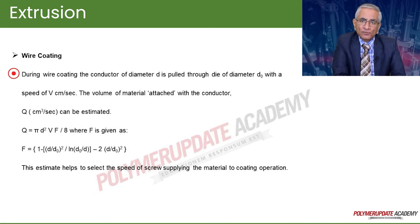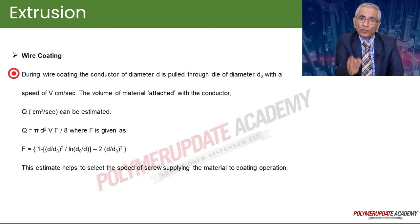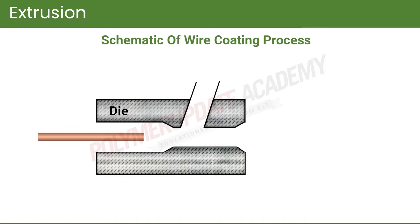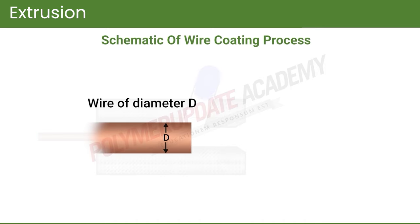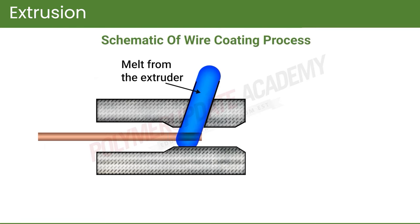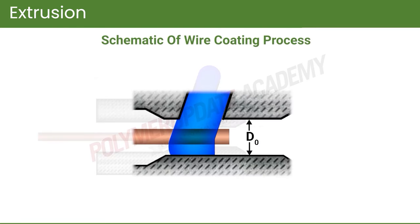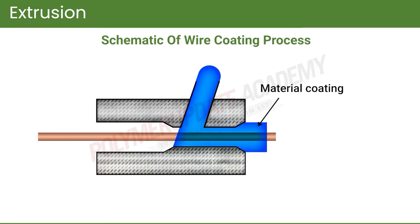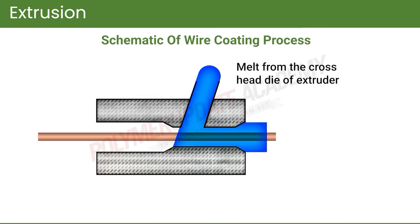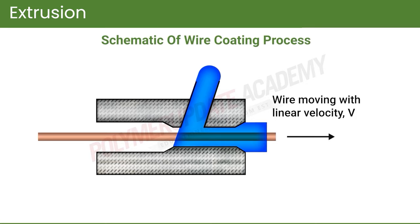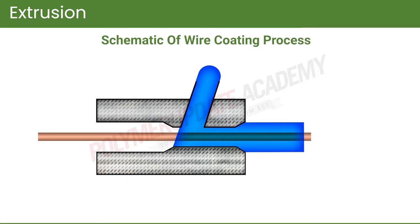This estimate helps to select the screw speed for supplying the required material. As seen in the previous part of the lecture, if we know the flow rate, we can select the appropriate speed. In the wire coating process, the conductor of diameter d is coated in a die where the die diameter is d0. The d0 determines the thickness of coating to be applied. The material is supplied by the extruder, which is at the crosshead. The conductor moves with a linear velocity of v and comes out from the die with the given coating.